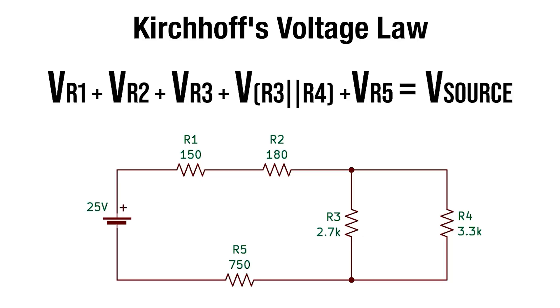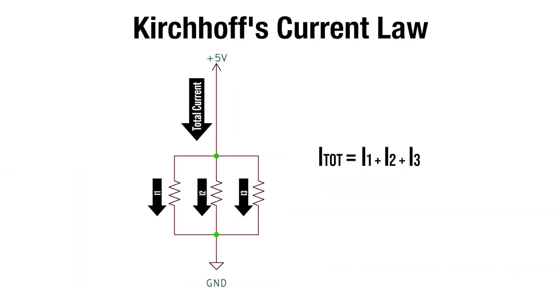You may have heard of Gustav Kirchhoff, a Prussian/German physicist who came up with some simple but very relevant laws that we use in electronics — known as Kirchhoff's voltage law and Kirchhoff's current law. KVL informs us that the sum of the voltage drops in a circuit are equal to the source voltage. Kirchhoff's current law informs us that the sum of currents entering and exiting a node must equal zero — or better said, the sum of currents in a parallel circuit equals the current entering and/or exiting respective nodes.